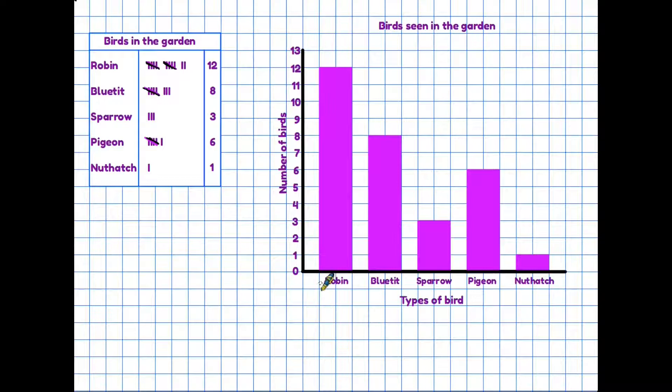So to read the graph, first of all let's take a look at the robin. If we look at the bar immediately above its name and go to the top of the bar, we can see by reading across the bar chart here that there were 12 robins in the garden. Blue tit, similarly go to the top and read across, we can see there were 8 blue tits. The sparrow is 3, the pigeon is 6, and the nuthatch is 1.